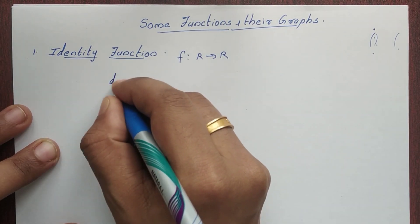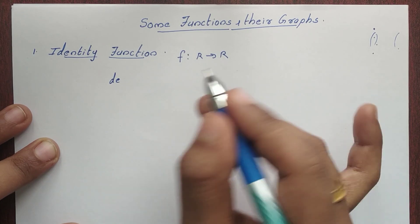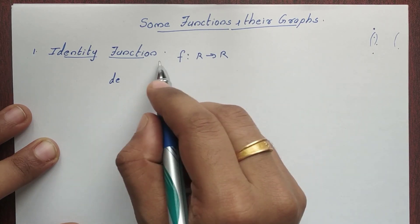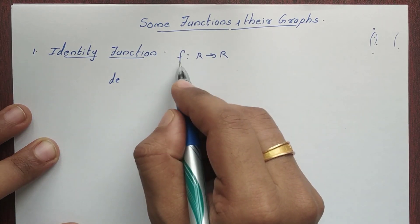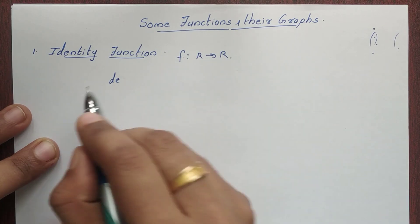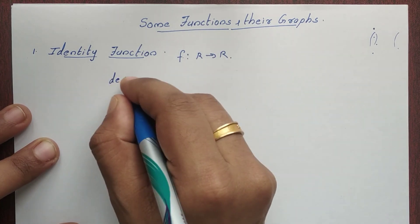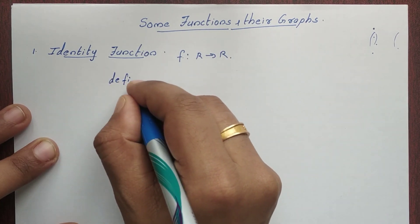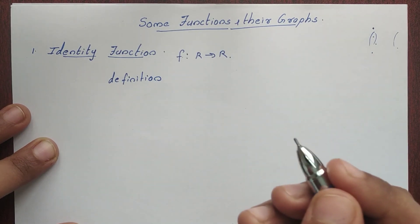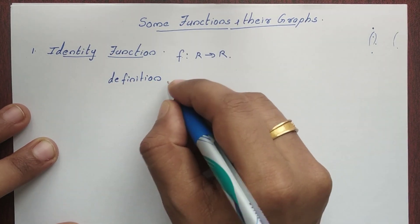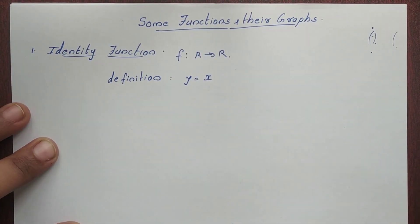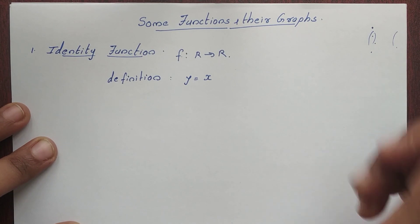We will learn the definition of the identity function. The function is defined as f from R to R. The definition is: y is equal to x — that is the identity function.